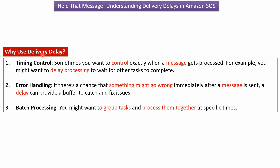Now we will see why we use delivery delay. First is timing control — sometimes you want to control exactly when a message gets processed. For example, you might want to delay processing to wait for other tasks to complete. Second is error handling — if something might go wrong immediately after the message is sent, a delay can provide a buffer to catch and fix issues. Third is batch processing — you might want to group tasks and process them all together at a specific time.